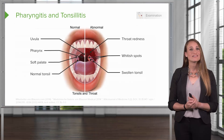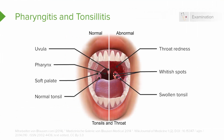On the left, you'll see a normal throat. The uvula is pink, it's midline, it's non-edematous, the pharynx is clear, the soft palate is without any discoloration, and the patient has a normally sized tonsil. On the right, in the abnormal throat, the patient may have throat redness or erythema, white spots on their tonsils called exudate, and their tonsils may be enlarged.